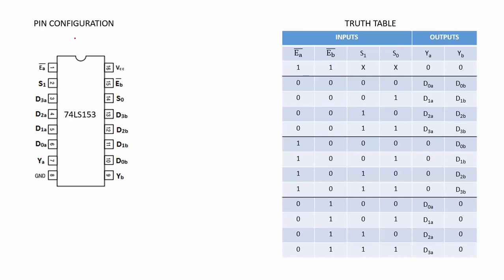This is the pin configuration of 74LS153 IC. Pin number 16 is VCC. Pin number 8 is ground. Pin number 1 is an active low enable for the first multiplexer. Pin numbers 2 and 14 are select lines S1 and S0. Pin numbers 3, 4, 5, 6 — these four are the data lines of the first multiplexer.